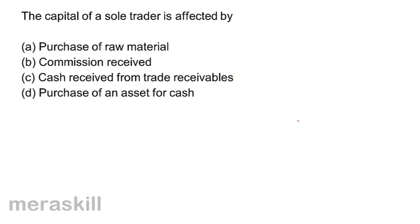The capital of a sole trader is affected by: A, purchase of raw material; B, commission received; C, cash received from trade receivables; and D, purchase of an asset for cash. The capital of a sole trader would be affected by commission received — income goes up, profit goes up, and the capital goes up.